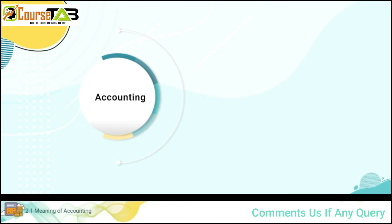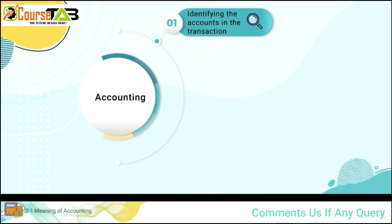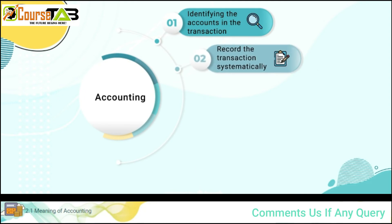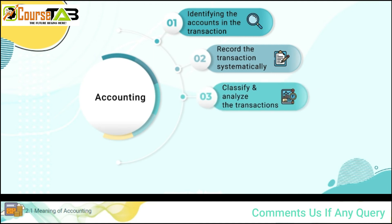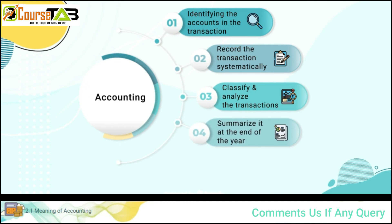If you break this definition, the first step will be identifying the accounts involved in the transaction. The next step will be to record the transaction systematically. After this, you need to classify and analyze the transaction, then summarize it at the end of the year. Finally, we interpret the result of the above steps in the form of a financial report.